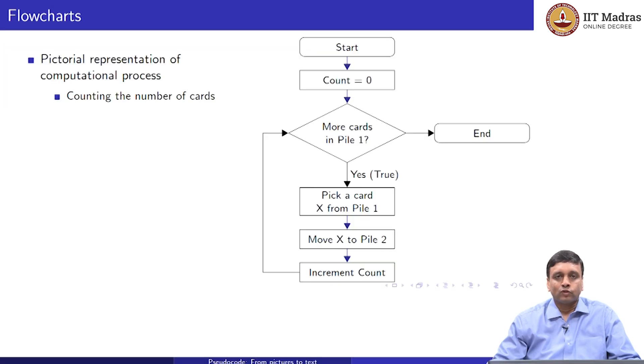If you remember, we had drawn some flowcharts for the algorithms that we had discussed in the class. The first one was a simple one to count the number of cards in a stack of cards. So, here on the right, we have a flowchart, which basically starts, then sets a variable count to 0. Then, as long as there is a card to check, it picks it up, increments the count, and moves the card to the second pile. And once all the cards have been moved to the second pile, then we stop.